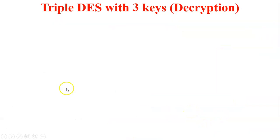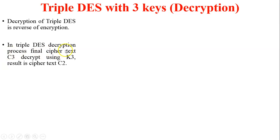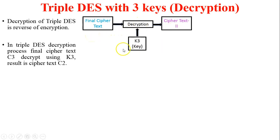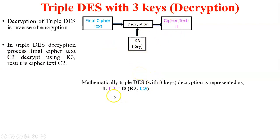Now we discuss decryption of Triple DES with three keys. Decryption is the reverse of encryption. The receiver receives the data and decrypts the ciphertext one by one. First, the final ciphertext C3 is decrypted using K3 to obtain ciphertext C2. In the figure, the first decryption process has inputs C3 and K3, generating C2. Mathematically: C2 = D(K3, C3).